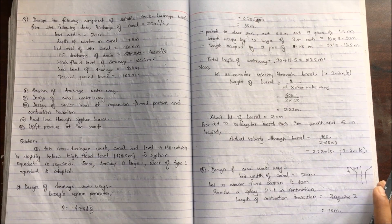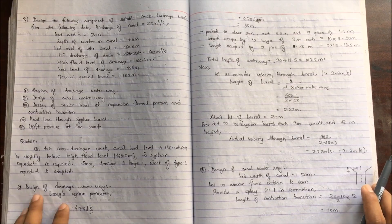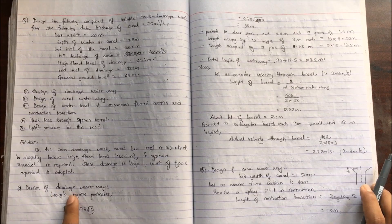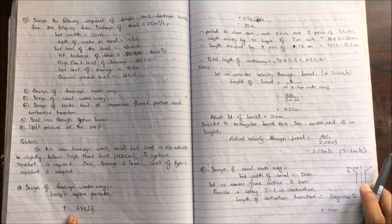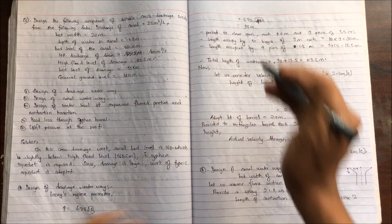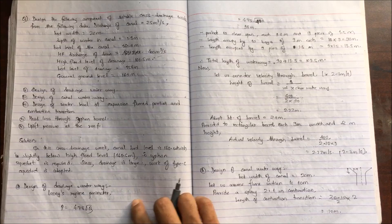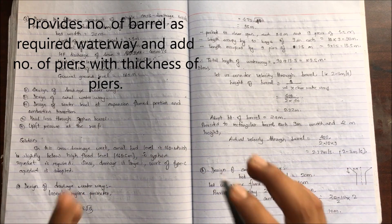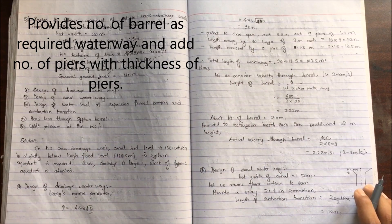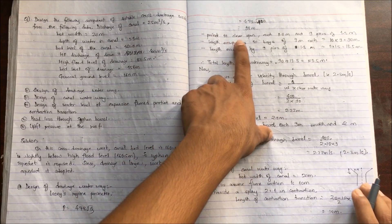The first step is to design the drainage waterway using P = 4.75 × √Q, where Q is the discharge of the drainage (not the canal). In our case Q = 400, so P = 4.75 × √400 = 95 m as the total waterway. We now provide number of barrels through which water will pass — providing 10 clear spans of 9 m each.